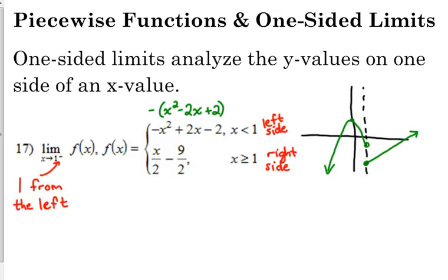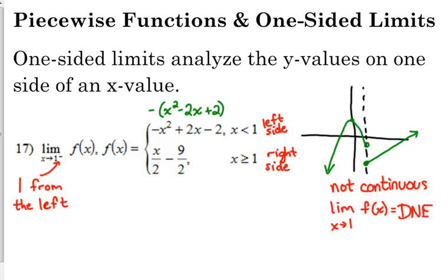Remember we talked about this being not continuous when we talked about piecewise functions. If we talked about the two-sided limit — if it said the limit as x approaches 1 of f of x with no plus or minus — that limit would be does not exist, because when you follow the function from the left side you're approaching negative 1, and from the right side you're approaching negative 4. Those two values don't agree, so the two-sided limit does not exist.